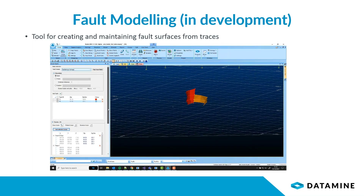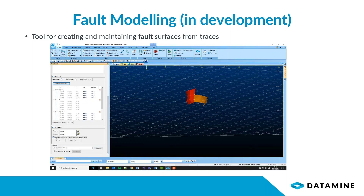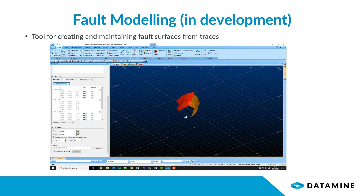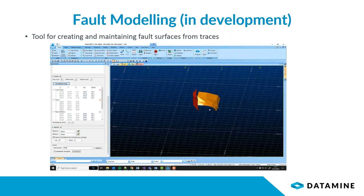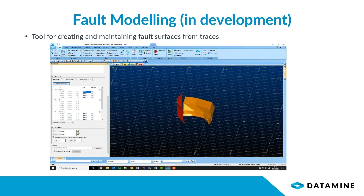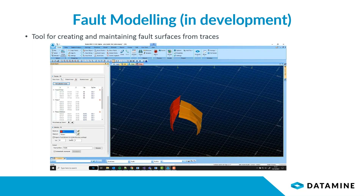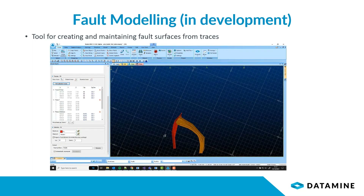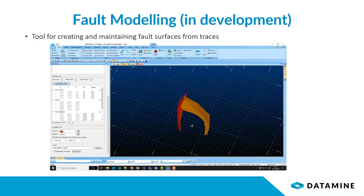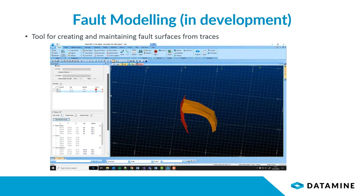If you want to extend these faults to a certain distance, that's very easy to do — both up and down. You can also decide to extend it to a prototype or a boundary string if that's what you prefer. If you decide that the direction it's extended in isn't quite right, it's really easy to change that. Here I've just changed the dip default, and making sure that the fault terminates on another fault is very easy to do.